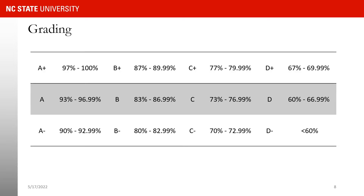We are using NC State University's typical cutoff points for grading. So A-plus would be between 97% and 100%, A between 93% and 97%, and so on.